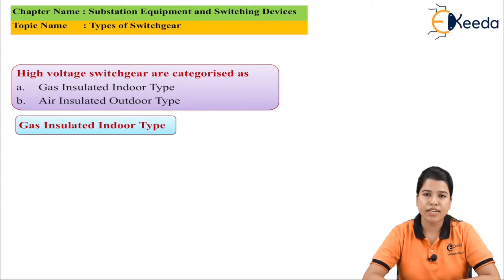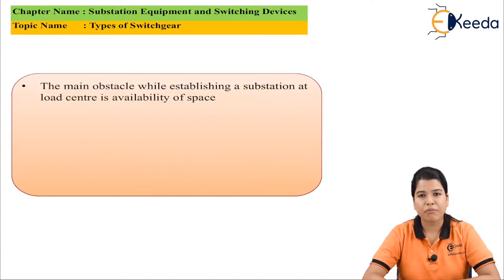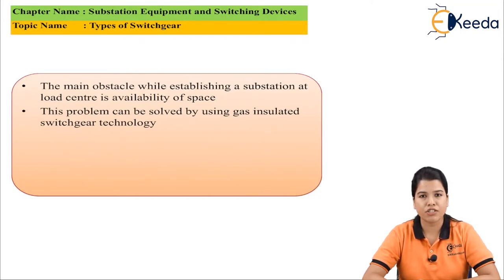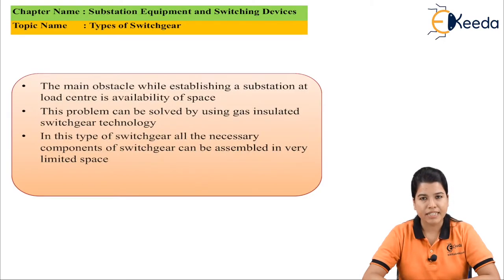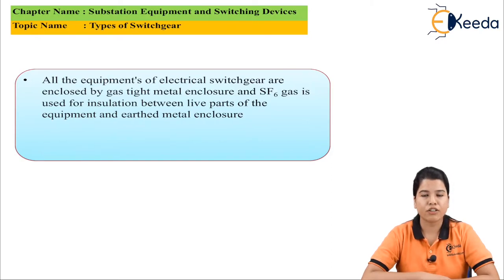The gas insulated indoor type switchgear is shown in the figure. The main obstacle while establishing a load center is the availability of space. This problem can be solved by using gas insulated indoor switchgear, since the space required for installation is very less and all components can be assembled in very little space. It is a kind of metal enclosed switchgear where all equipment is enclosed in a gas-tight metal box and sulfur hexafluoride gas is used for insulation.